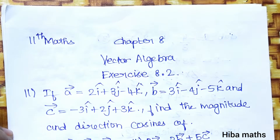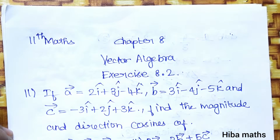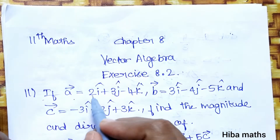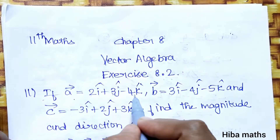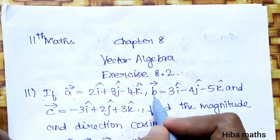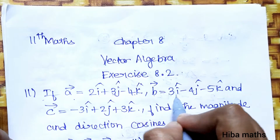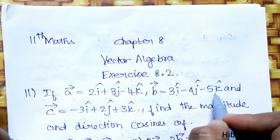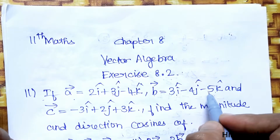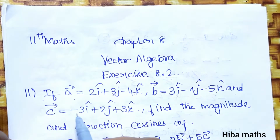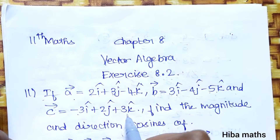Hello students, welcome to UVA Max 11th standard Maths, Chapter 8 Vector Algebra, Exercise 8.2, Question 11. If vector a is equal to 2i + 3j − 4k, vector b is equal to 3i − 4j − 5k, and vector c is equal to −3i + 2j + 3k.